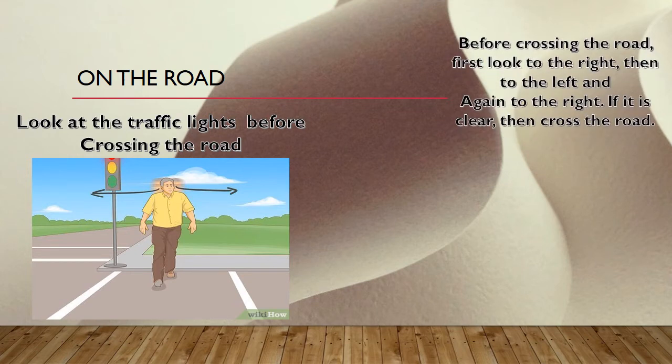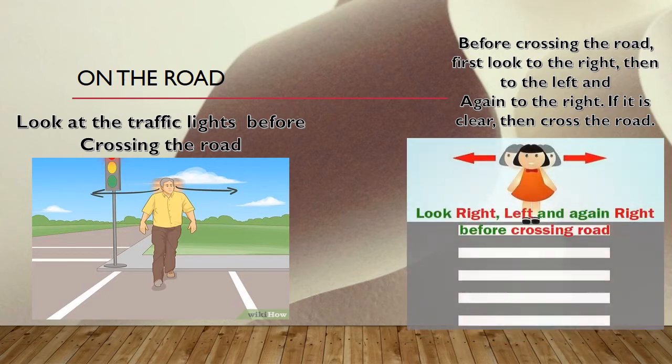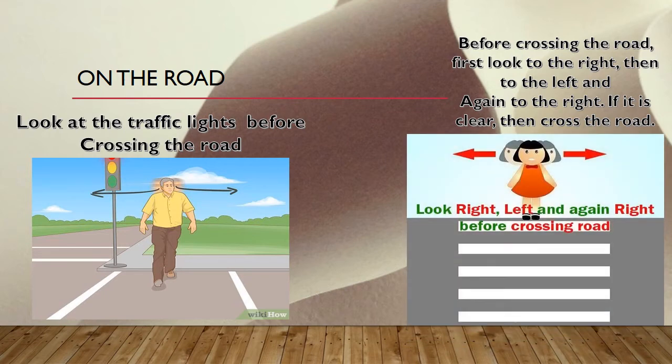Before crossing the road, first look to the right, then to the left, and again to the right. If it is clear — meaning no vehicles — then you can cross the road. So look at the traffic lights and look right, left, then right again before crossing.